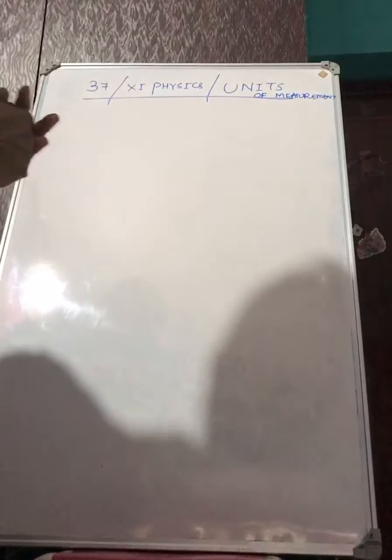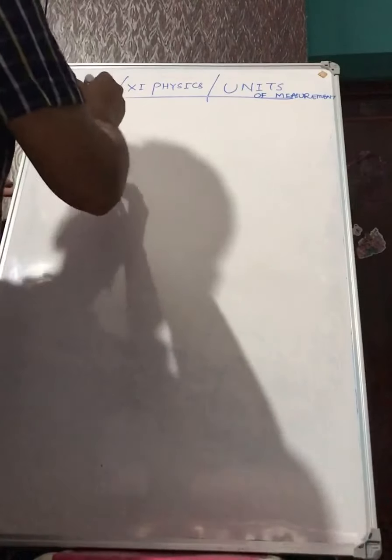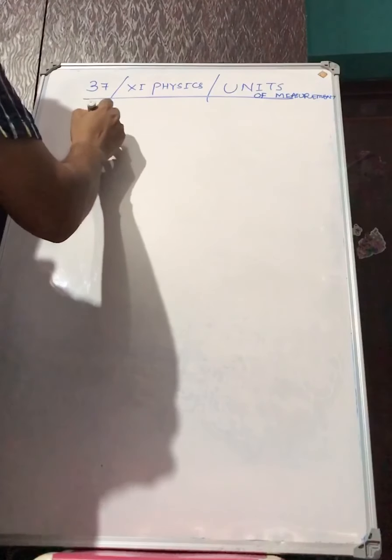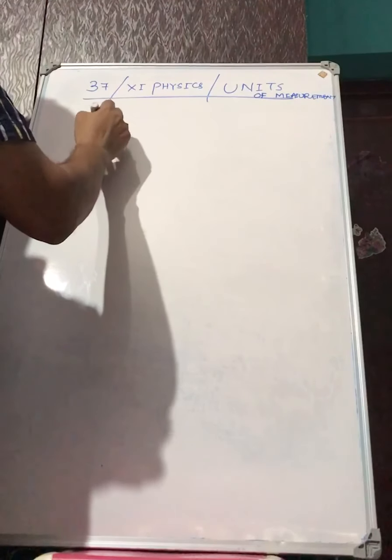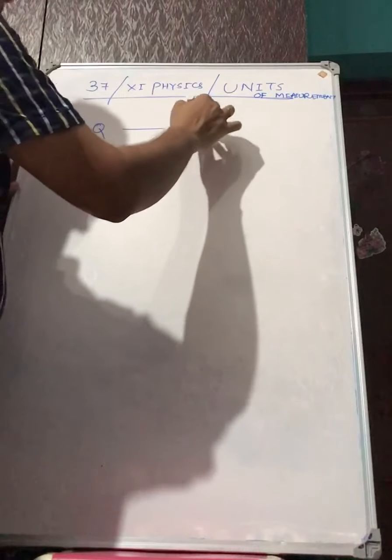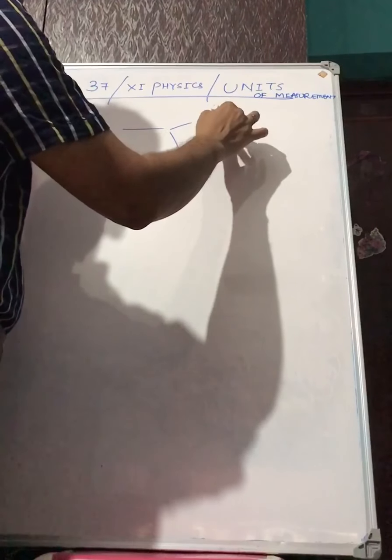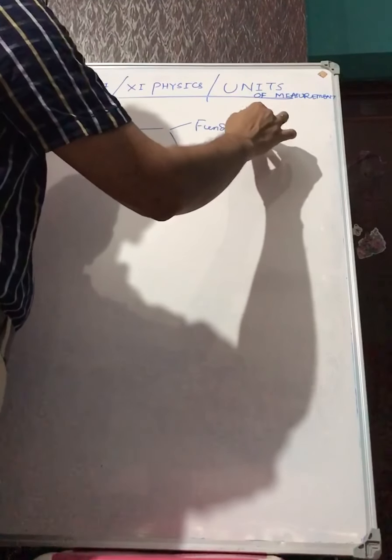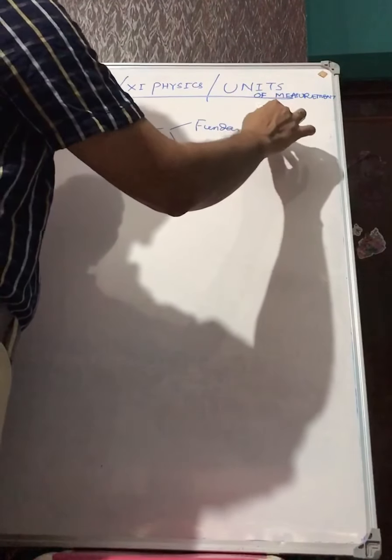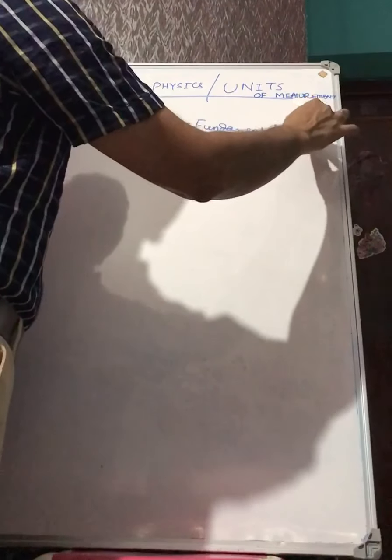That unit can be a fundamental unit or it can be a derived unit — that depends on what kind of physical quantity we are using. Physical quantities can be divided into two parts: fundamental physical quantity and derived physical quantity.